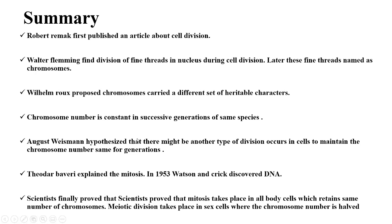Summary: Robert Remak first published an article about cell division. Walter Fleming found the division of fine threads in the nucleus during cell division; later, these fine threads were named chromosomes. Wilhelm Roux proposed that chromosomes carried a different set of heritable characters. Chromosome number is constant in successive generations of the same species. August Weismann hypothesized that there might be another type of division in cells to maintain the chromosome number across generations. Theodore Boveri confirmed meiosis, and in 1953 Watson and Crick discovered the structure of DNA.